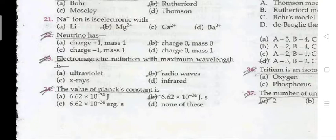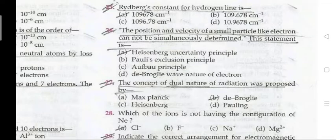Question 24: the value of Planck's constant is 6.62 × 10^-34 J·s. The Rydberg constant for hydrogen line is 109678 cm⁻¹. Question 26: the position and velocity of a small particle like an electron cannot be simultaneously determined — this statement is Heisenberg's uncertainty principle.